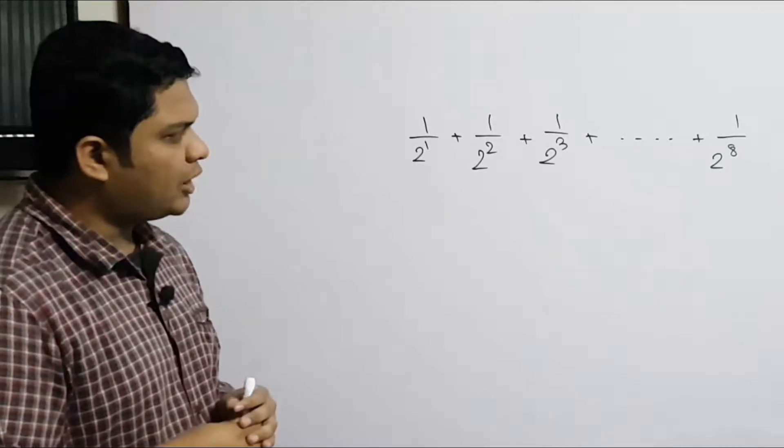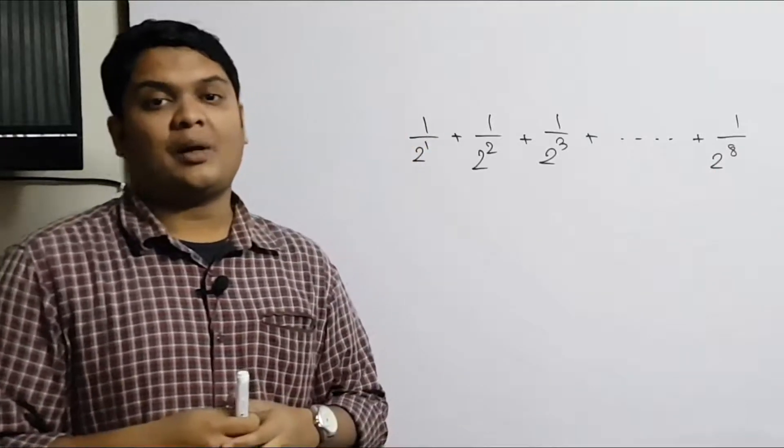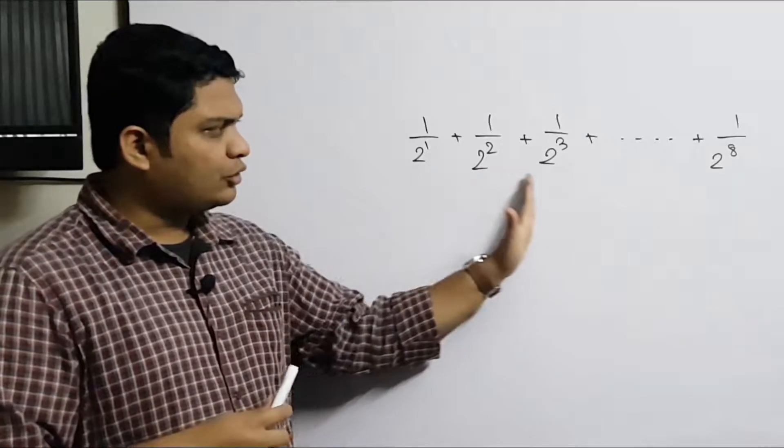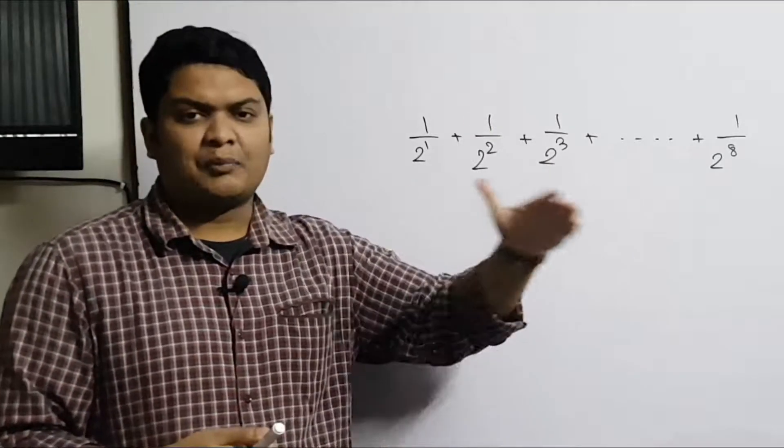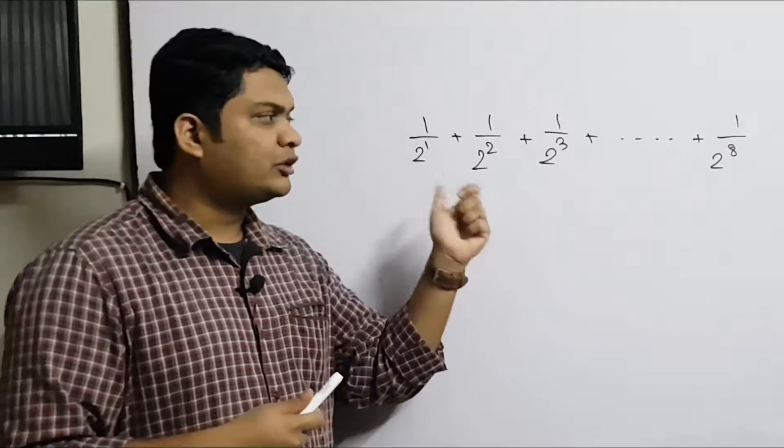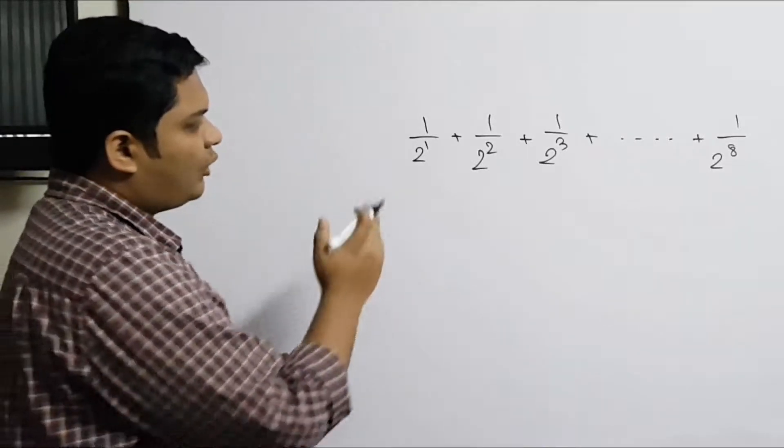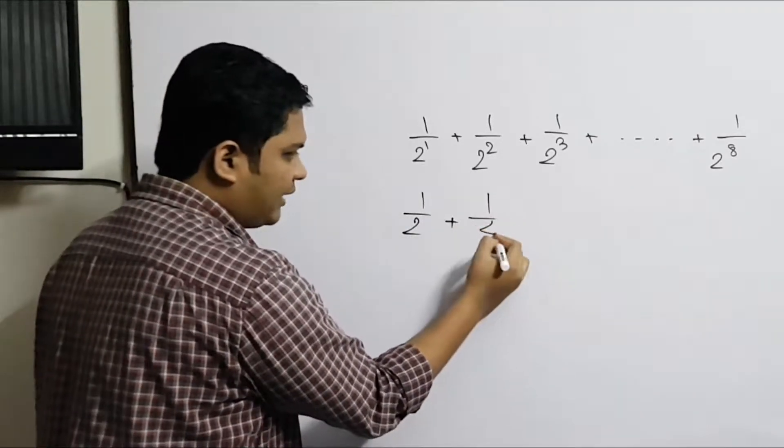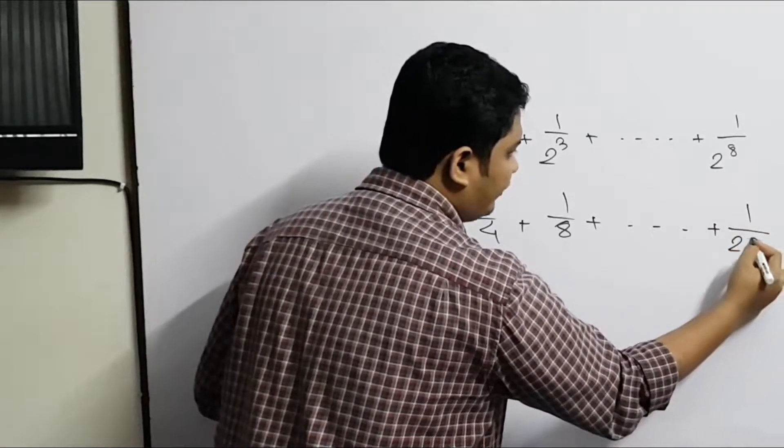The problem is: 1 by 2 to 1 plus 1 by 2 squared plus 1 by 2 cubed, and so on. In other words, 1 by 2 plus 1 by 4 plus 1 by 8, ultimately reaching 1 by 256.